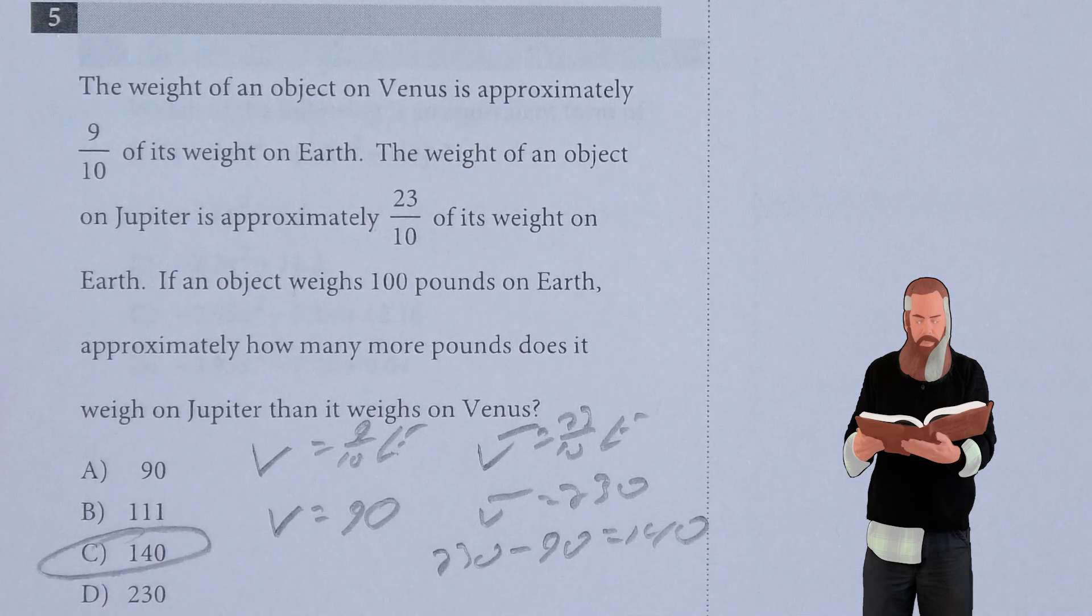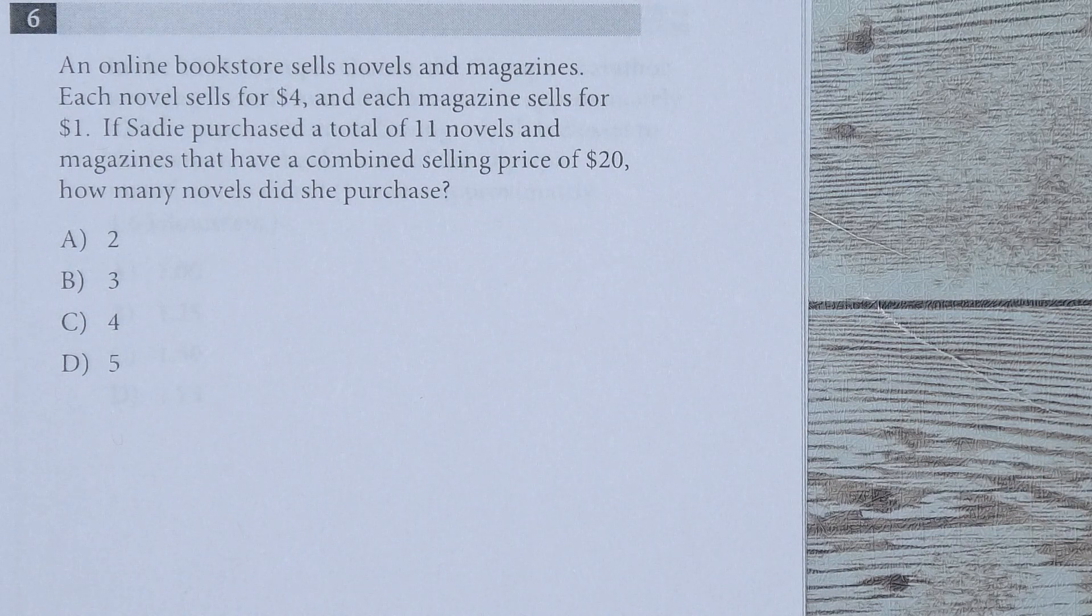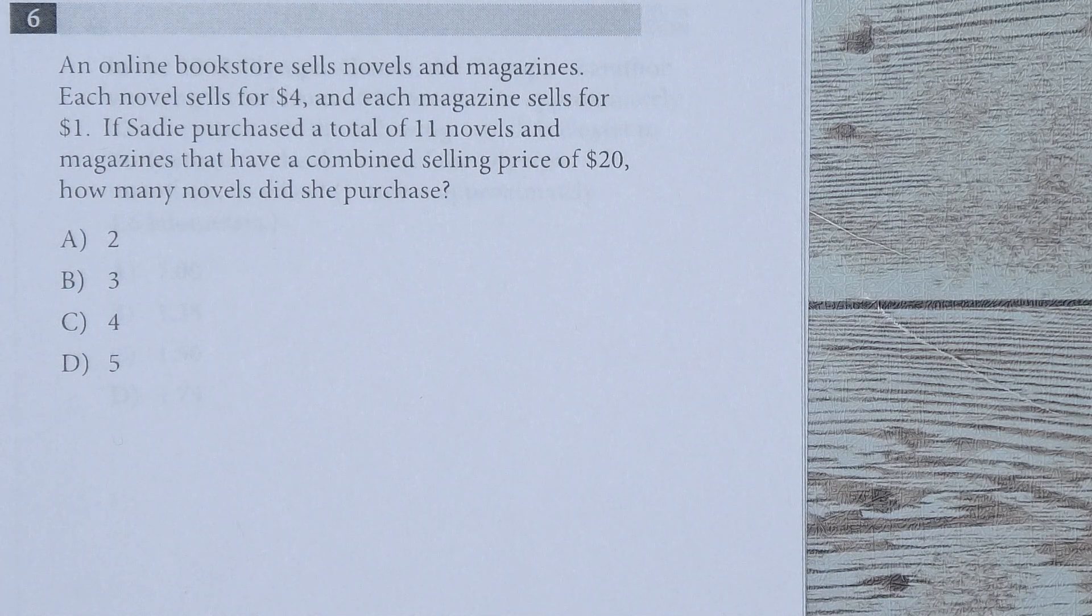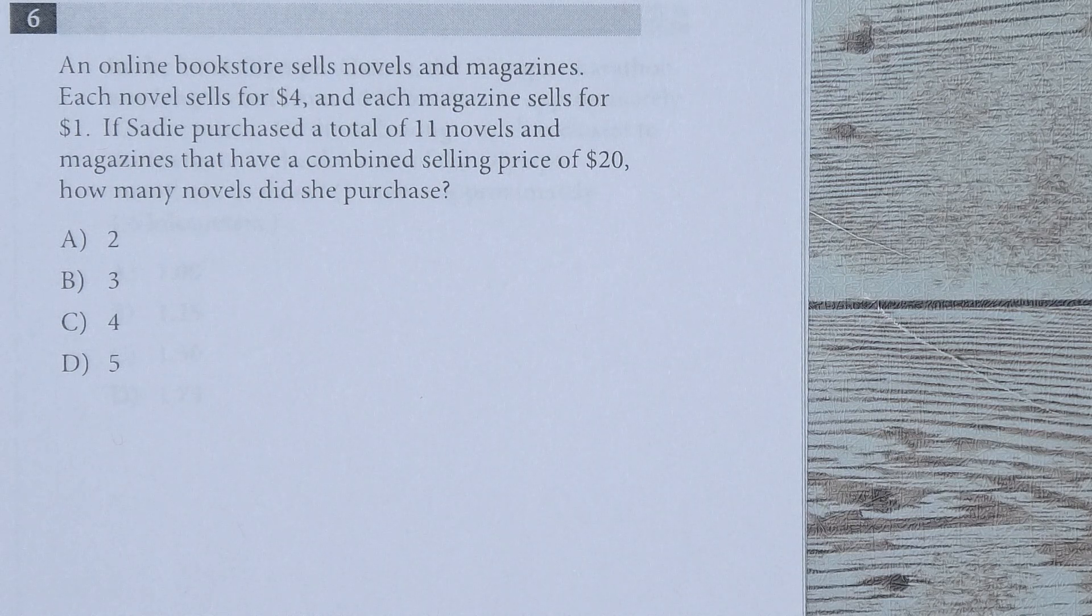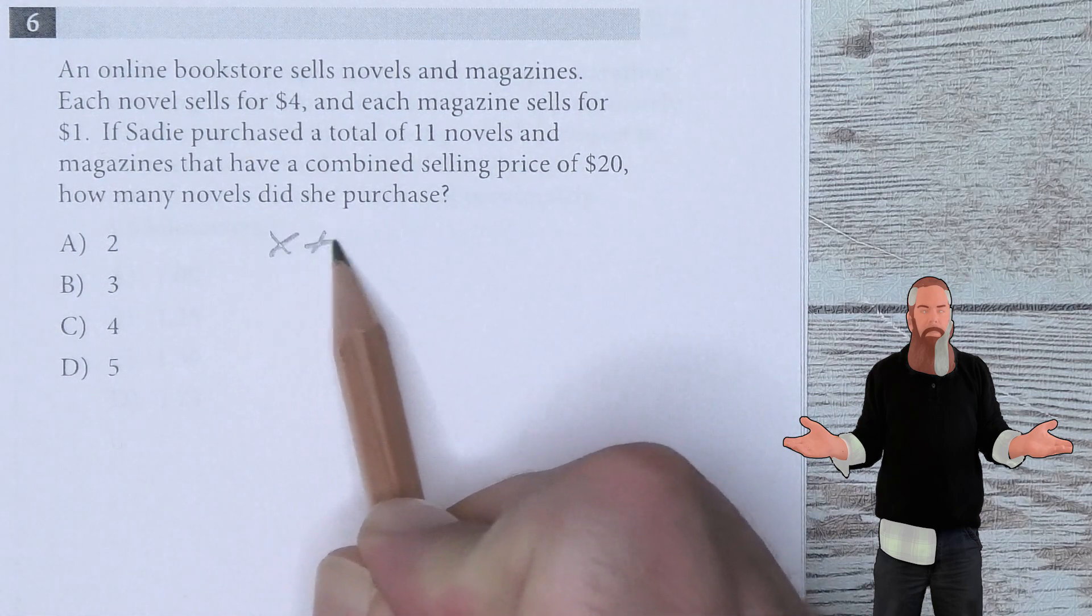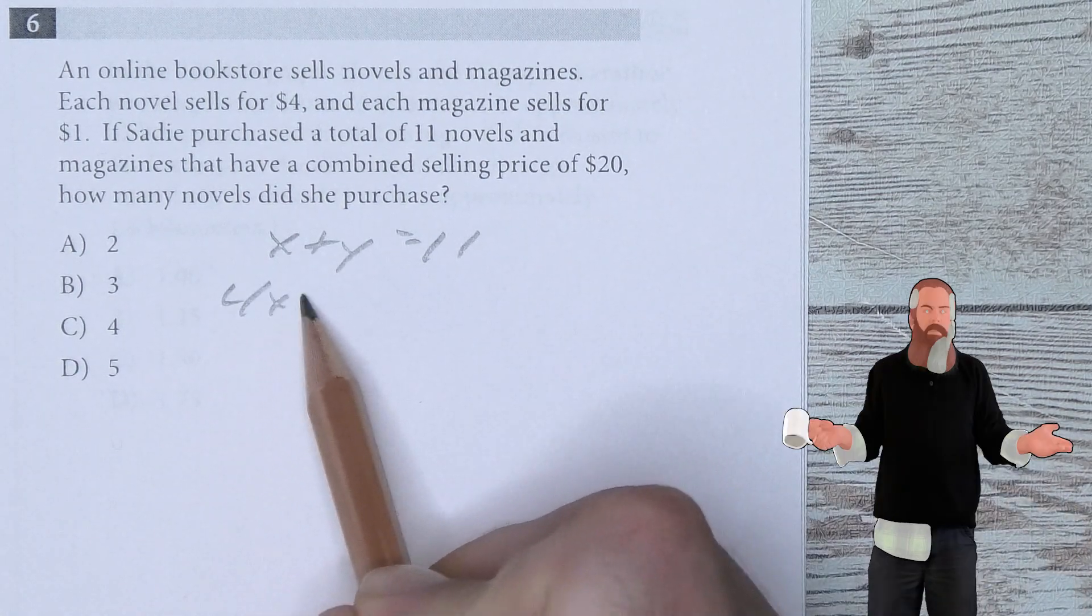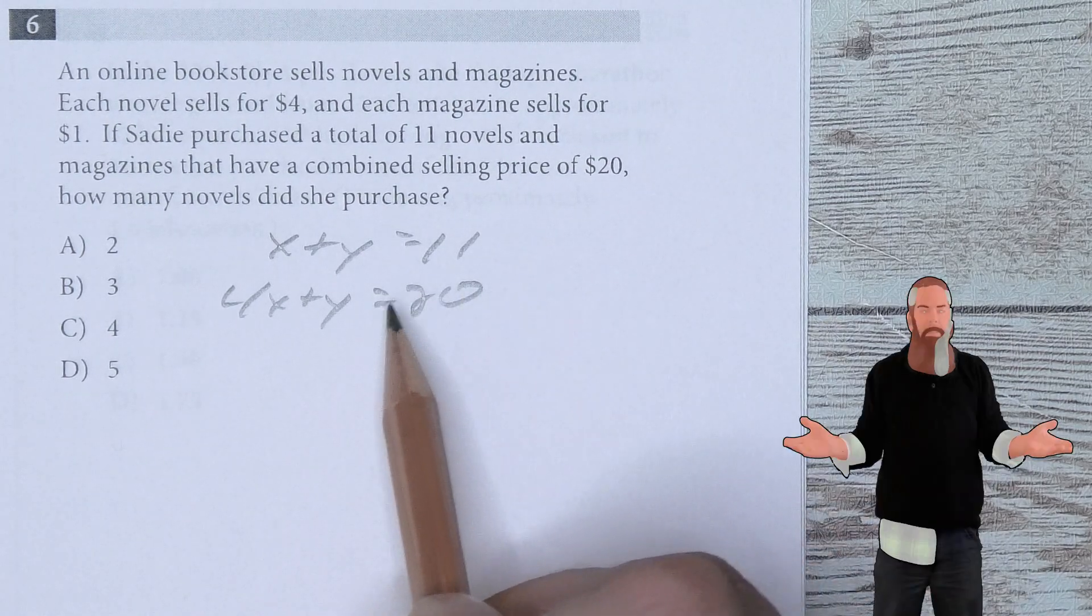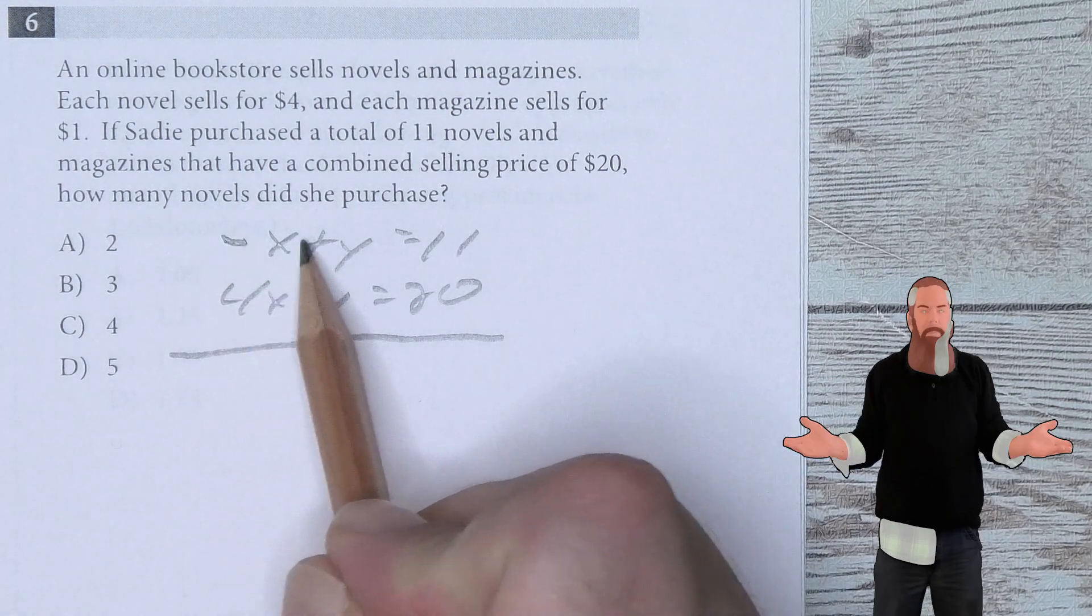An online bookstore sells novels and magazines. Each novel sells for $4 and each magazine sells for $1. If Sadie purchased a total of 11 novels and magazines that have a combined selling price of $20, how many novels did she purchase? We need to build a system of equations. The total of what she bought, novels and magazines, equals 11. It is $4 for a novel and $1 for a magazine. She spent $20. This is now my system of equations.